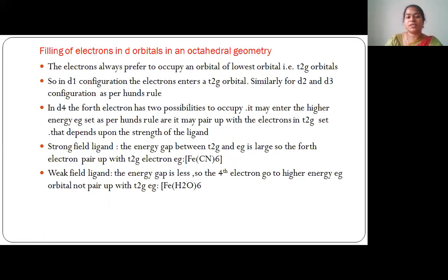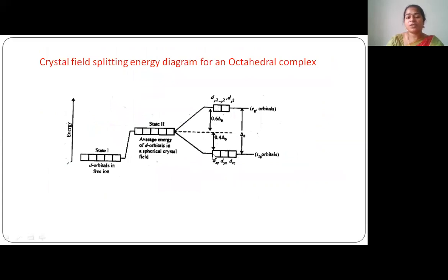Next we'll see the filling of electrons in octahedral geometry. Electrons always prefer to occupy orbitals of lowest energy according to the Aufbau principle — electrons enter into orbitals of lower energy first. Since t2g orbital energy is less compared to eg, electrons always prefer to enter t2g first. In d1, d2, and d3 configurations, electrons enter into t2g. But for d4 configuration, the fourth electron has two possibilities: it may pair up with a t2g electron, or it may go to the eg orbital.